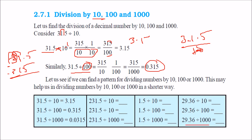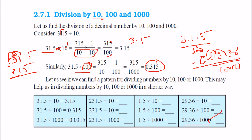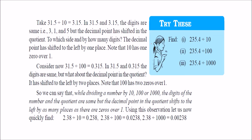Take one more example: 29.36 divided by 1000. Shifting the decimal three places to the left — since we need to go past the 2 with nothing there — gives 0.02936. So when dividing by 10, 100, or 1000, the decimal point shifts to the left by as many places as there are zeros after 1.